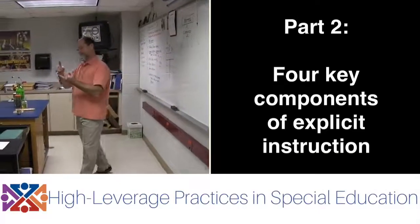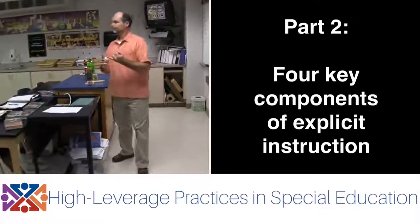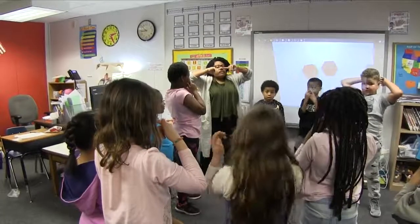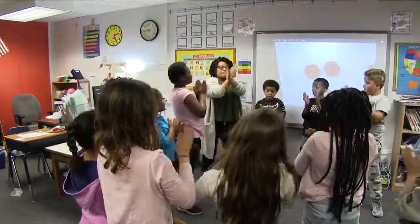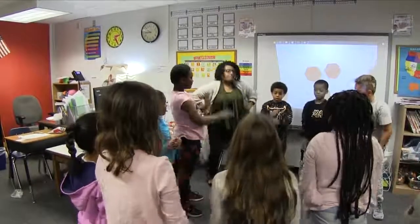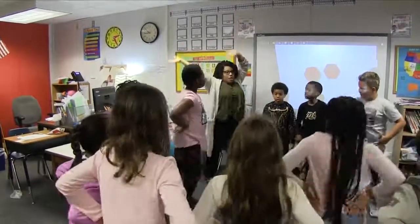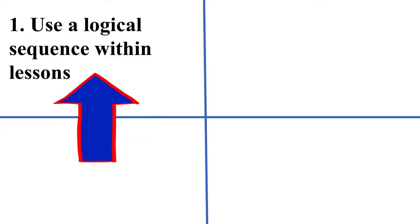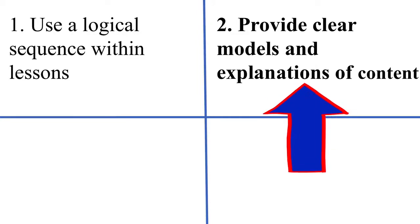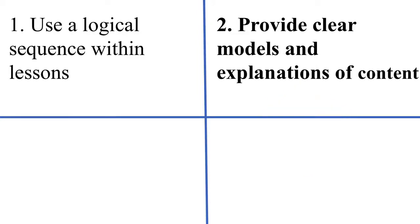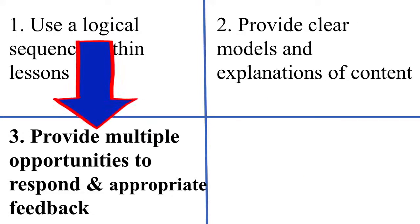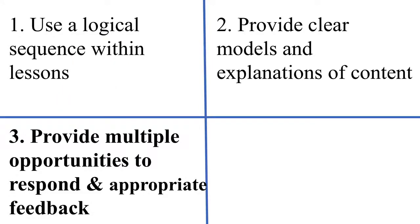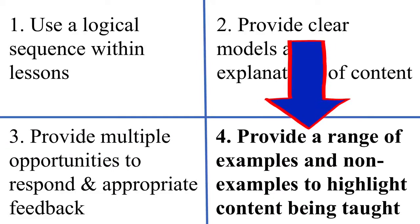Part 2: Four Key Components of Explicit Instruction. Although Explicit Instruction contains numerous aspects, in this video we focus on four key components: use a logical sequence within lessons; provide clear models and explanations of content; provide multiple opportunities to respond and appropriate feedback on performance; and provide a range of examples and non-examples to highlight content being taught.